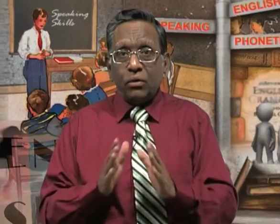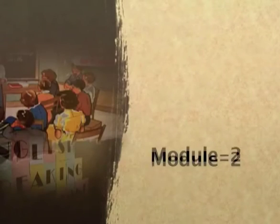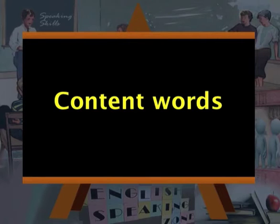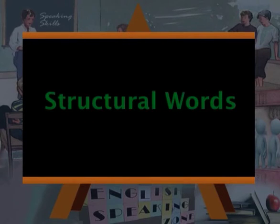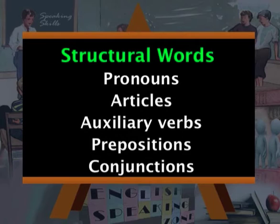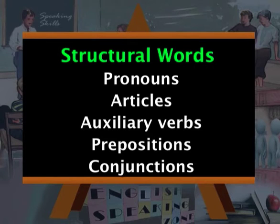The other words are cement words — pronouns, auxiliary verbs, prepositions, articles, etc. — and this is how the rhythm of English is maintained. Some words are stressed and some are left unstressed. The stressed words are known as content words and the unstressed ones are structural words or form words. Content words are nouns, main verbs, adjectives, and adverbs. Structural words are pronouns, articles, auxiliary verbs, prepositions, and conjunctions.